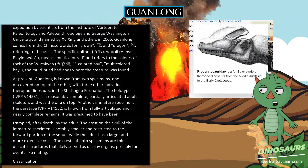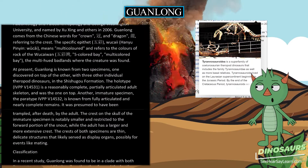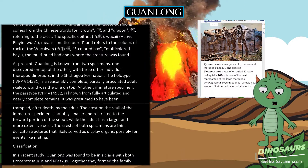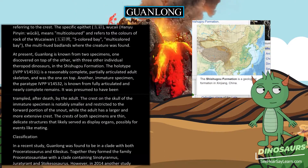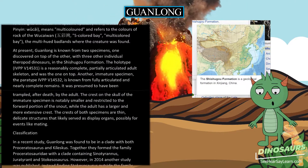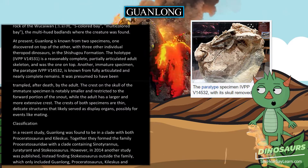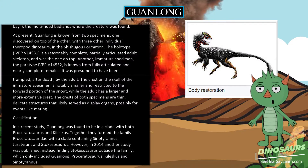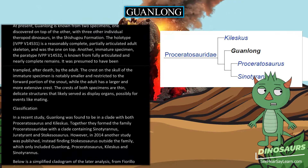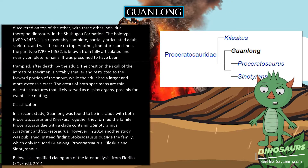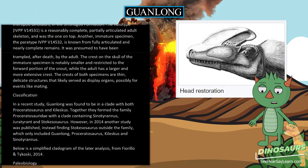At present, Guanlong is known from two specimens found one on top of the other, along with three other individual theropod dinosaurs in the Shishugou Formation. The holotype (IVPP V14531) is a reasonably complete, partially articulated adult skeleton, discovered on top. The paratype (IVPP V14532) is known from fully articulated and nearly complete remains; it was presumed to have been trampled after death by the adult. The crest on the immature specimen is notably smaller and restricted to the forward portion of the snout, while the adult has a larger and more extensive crest — both are thin, delicate structures likely serving as display organs, possibly for mating.